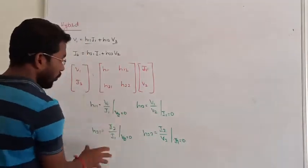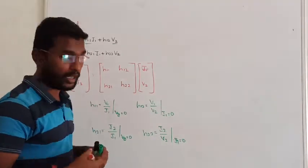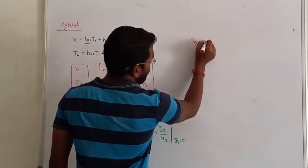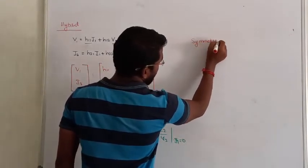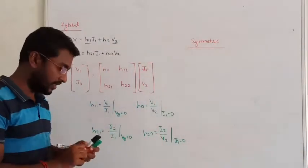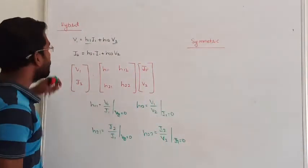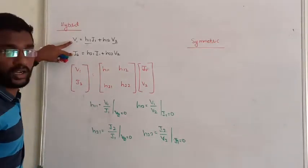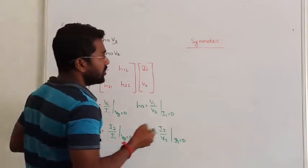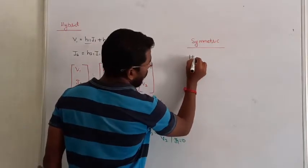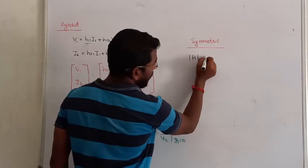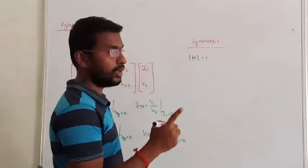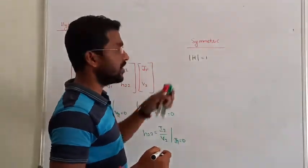Next, we find the symmetricity of the network. To check whether the network is symmetric or not, you go to the matrix. This is a mixed version of voltage and current. To check symmetricity, you find the determinant of the hybrid parameter matrix and check if it equals 1. If equal to 1, the network is symmetric; if not, it is unsymmetric.